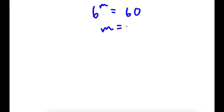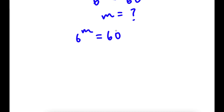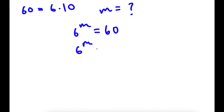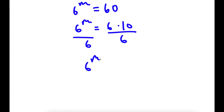So we want to find the value of m for this: 6 to the power of m is equal to 60. Now 60 is equal to 6 times 10. So now I have 6 to the power of m is equal to — substituting in 6 times 10 for 60 — 6 times 10. Now I'm going to be dividing by 6 on both sides. So I have 6 to the power of m over 6 is equal to 10, since the two 6s on the right cancel out.